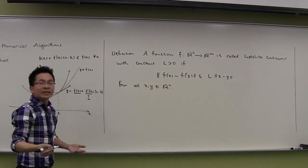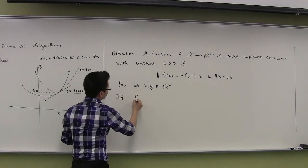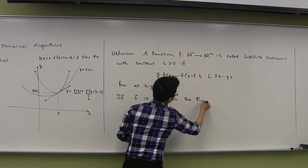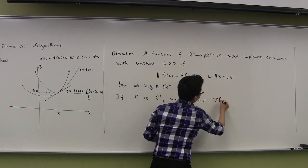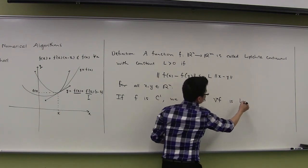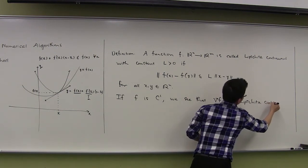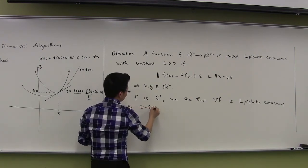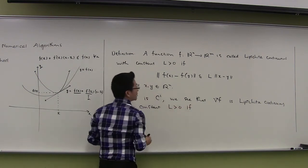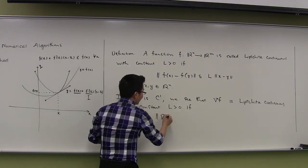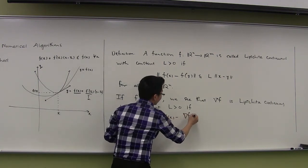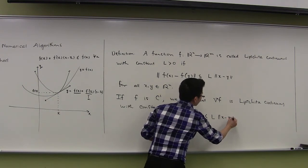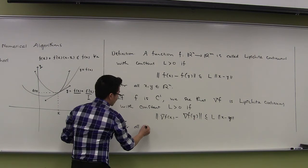If f is a C1 function, we say that the gradient of f is Lipschitz continuous with constant L if: the norm of the gradient of f at x minus the gradient of f at y is always less than or equal to L times norm of x minus y, for all x and y in Rn. This is just a particular case of the definition because the gradient of f is a function from Rn to Rn.